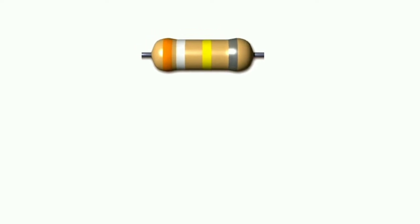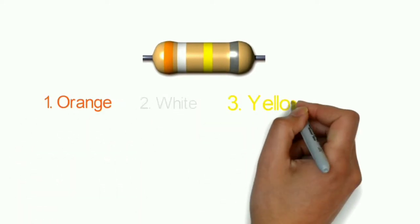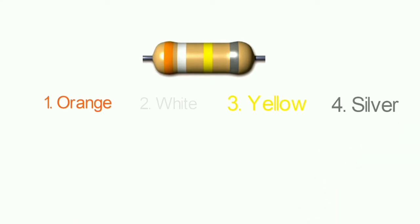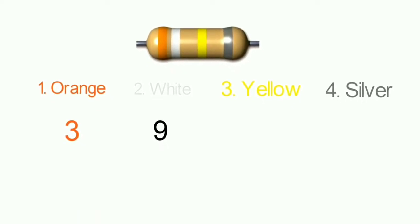Let me show you how to read a color band example. The color band is orange, white, yellow, and silver. Orange corresponds to digit 3, white corresponds to digit 9. So the first two digits give us 39. The third color — yellow — is the multiplier, corresponding to 10k ohm, that is 10 raised to the power 4.